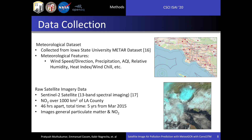Our meteorological data was collected from the Iowa State University Meteorological Aerodrome Reports, or METAR dataset. METAR collects meteorological data at municipal airstrips and airports around the world. For our model, we will be using data at 17 different sensor locations — 17 airstrips and airports around LA County. These sensors measure ground-level meteorological features including wind speed and direction, precipitation, air quality index (AQI), relative humidity, and much more.